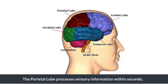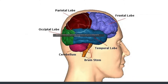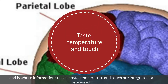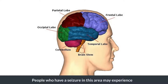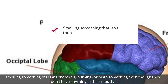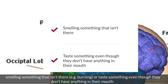The parietal lobe processes sensory information within seconds and is where information such as taste, temperature and touch are integrated or processed. People who have a seizure in this area may experience smelling something that isn't there — for example, burning — or taste something even though they don't have anything in their mouth.